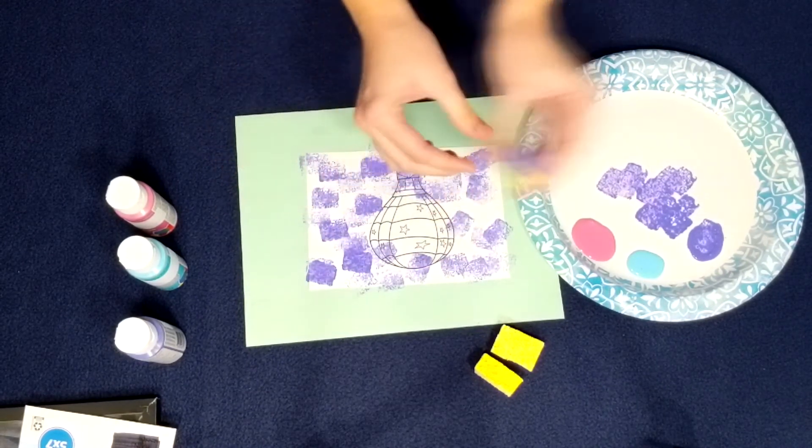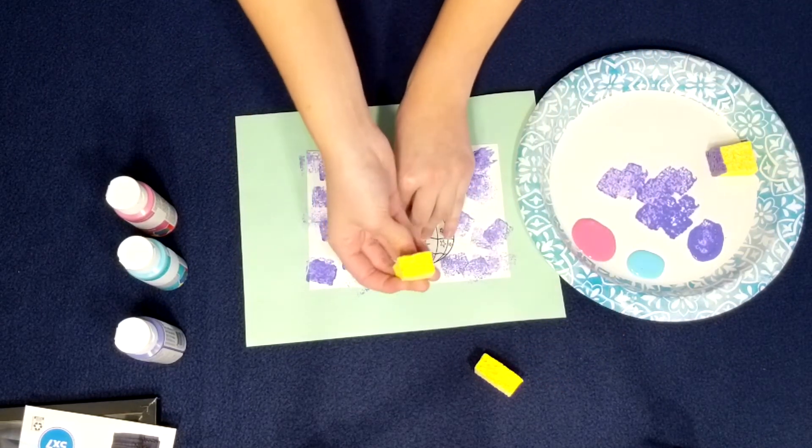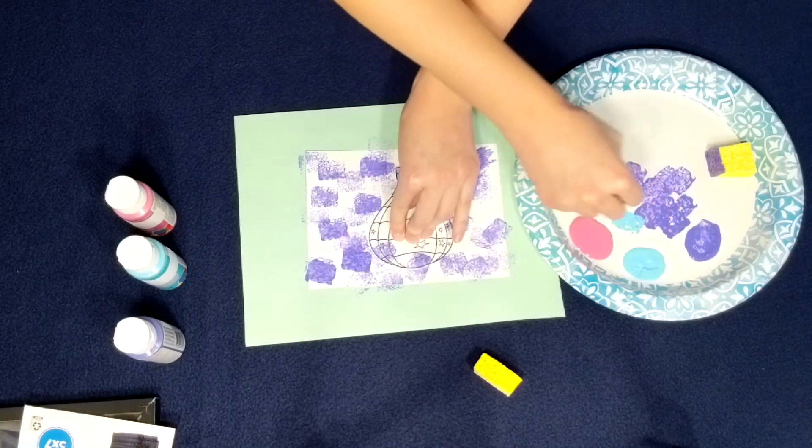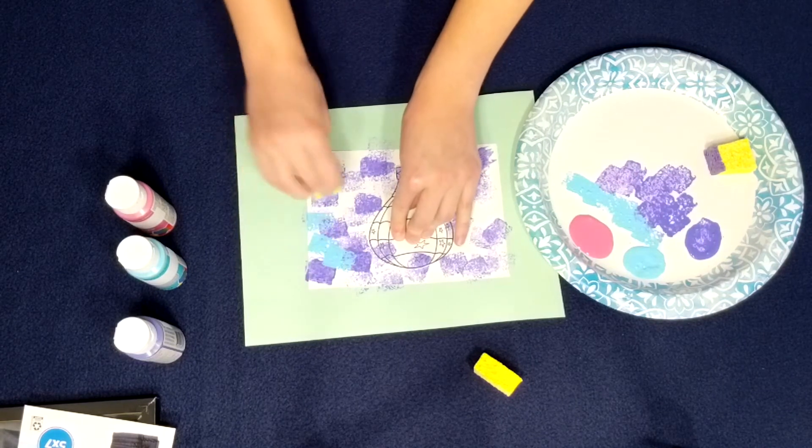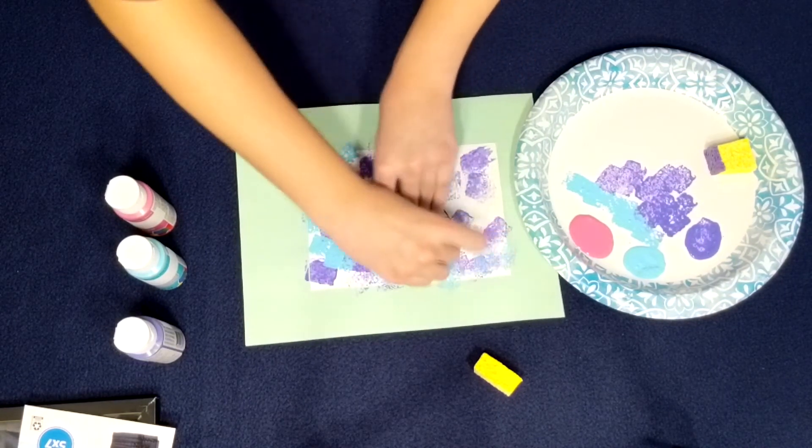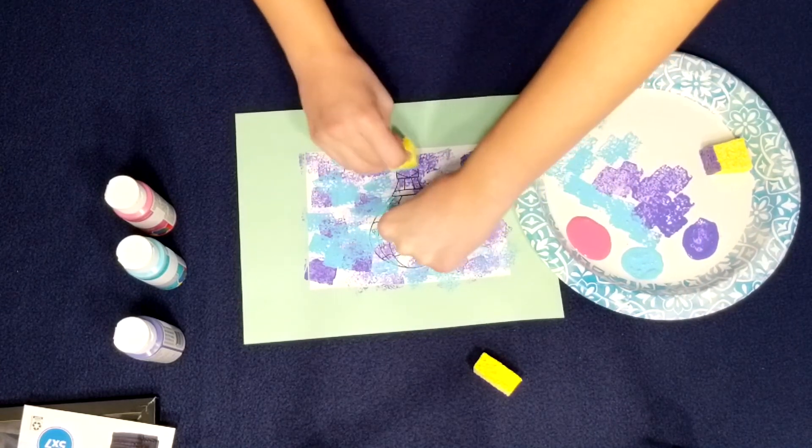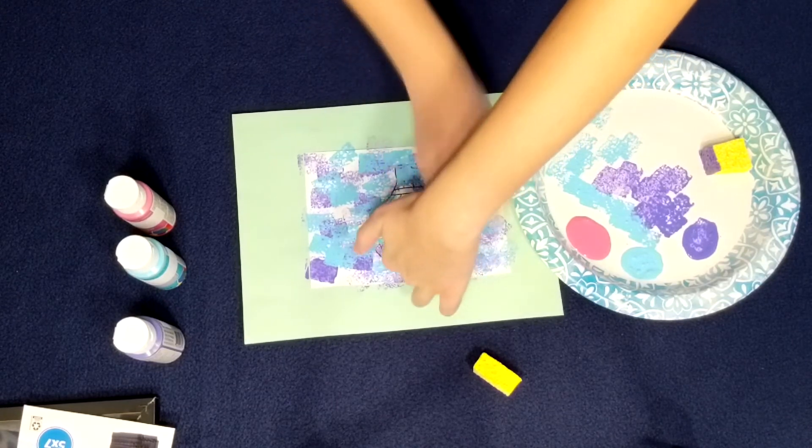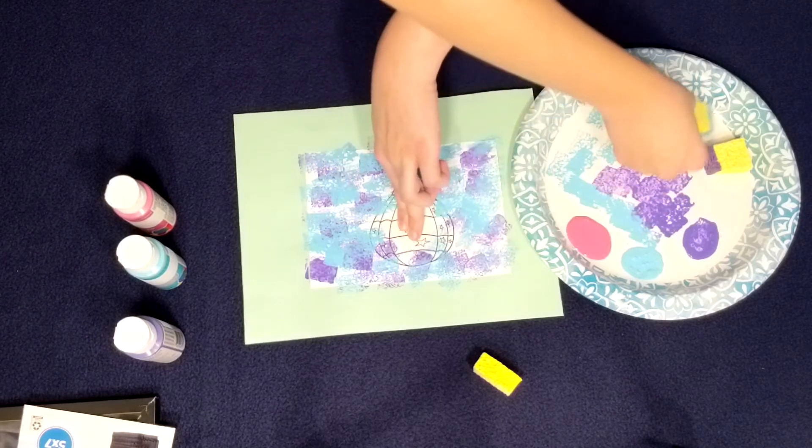So I might come back to purple. I'm not quite sure. Then using your second clean sponge, dip it into your medium size paint, dab it onto the plate to get some of the paint off and then dab all around. You can use any colors you want, but I'm using turquoise right now. And then put that off to the side.